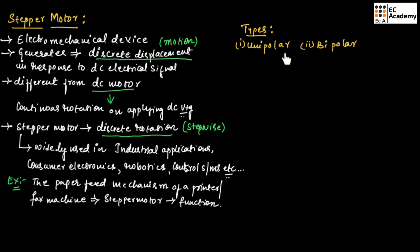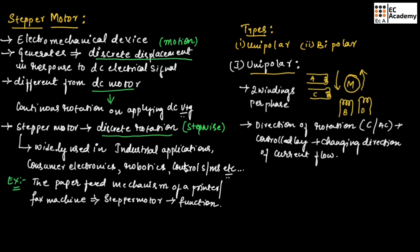There are two types of stepper motor: the first one is unipolar stepper motor and the second is bipolar stepper motor. In the unipolar stepper motor, it consists of two windings per phase. The direction of rotation in both clockwise and anticlockwise direction is controlled by changing the direction of current flow. The current in one direction flows in one coil and in the opposite direction through the other coil. Coil A and B carry current in opposite directions for phase 1, and coil B and D carry current in opposite directions for phase 2.